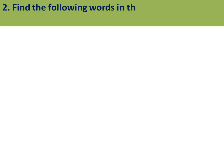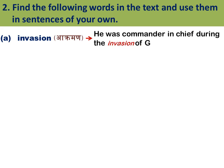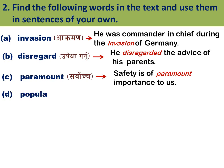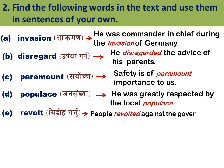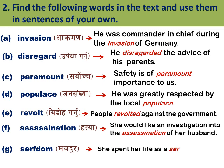Question Two: Find the following words in the text and use them in sentences of your own. A: 'Invasion' (akraman) — He was commander-in-chief during the invasion of Germany. B: 'Disregard' (upeksha garnu) — He disregarded the advice of his parents. C: 'Paramount' (sarvochha) — Safety is of paramount importance to us. D: 'Populace' — He was greatly respected by the local populace. E: 'Revolt' (bidroh garnu) — People revolted against the government. F: 'Assassination' (hatya) — She would like an investigation into the assassination of her husband. G: 'Serf' — She spent her life as a serf.